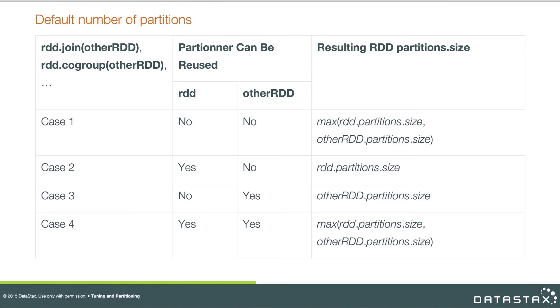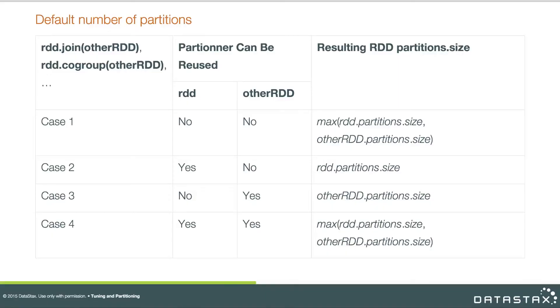Take a look at the table to see how binary operations work out. All of this depends on whether the partitioner of the input RDD can be reused. If it's the hash partitioner, it can be reused across the transformation; certain custom partitioners may also have that property. If neither input RDD has a reusable partitioner, the resulting RDD's partition count is simply the maximum of the two input partition counts. The same is true if both RDDs have a reusable partitioner. However, if just one has a reusable partitioner, that RDD's partition count dominates in the output.